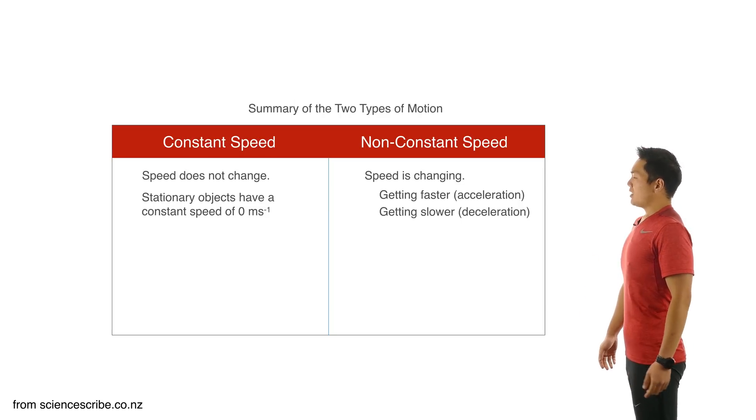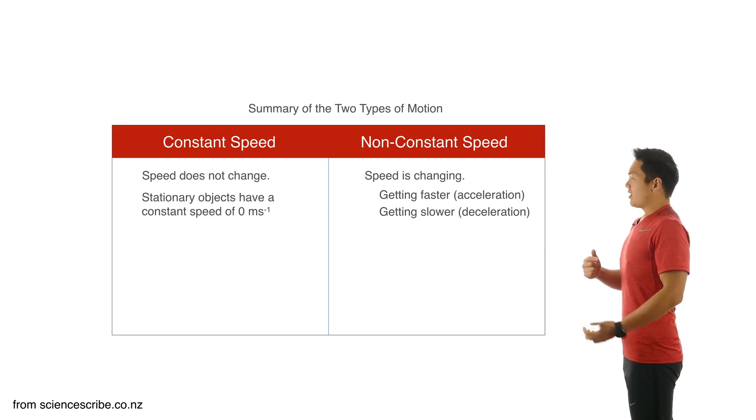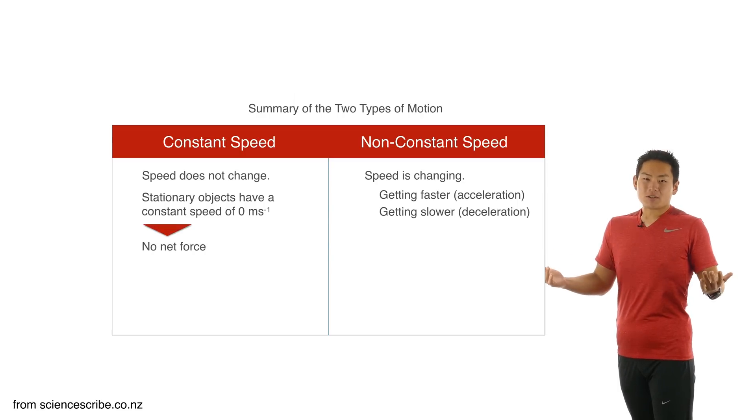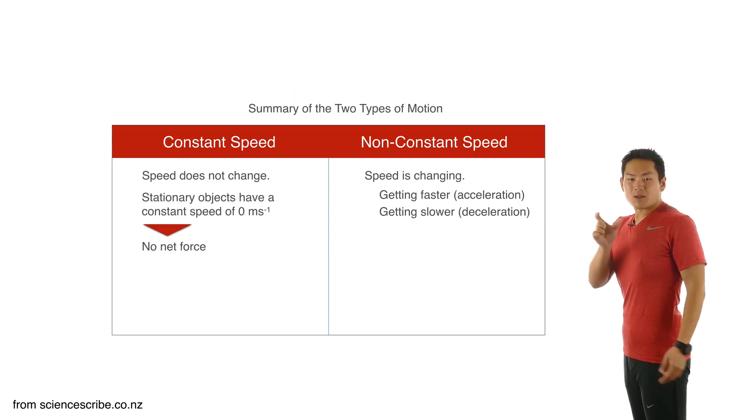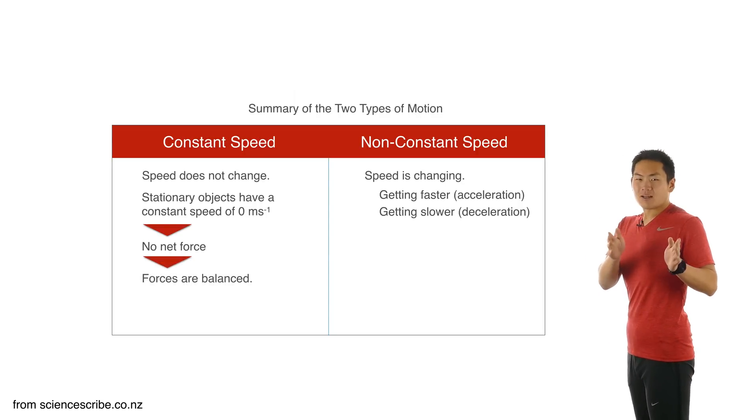Coming back to constant speed, though, if something has constant speed, I can tell you right now that it means that there's no net forces, and if there's no net forces, then we describe those forces as being balanced, and we can represent that on a force diagram by using the same sized arrows.